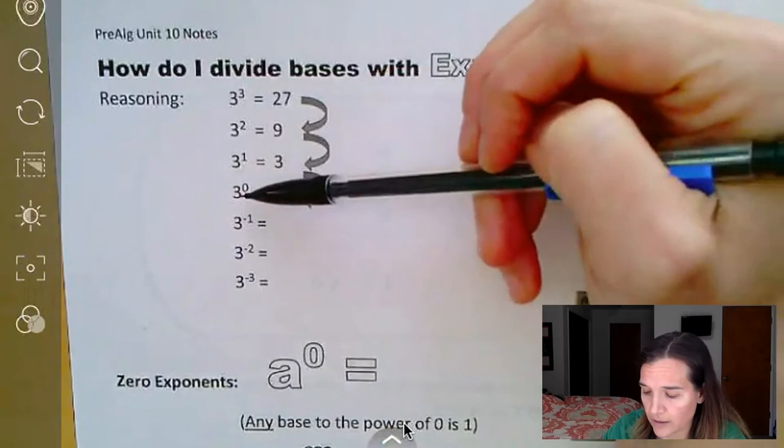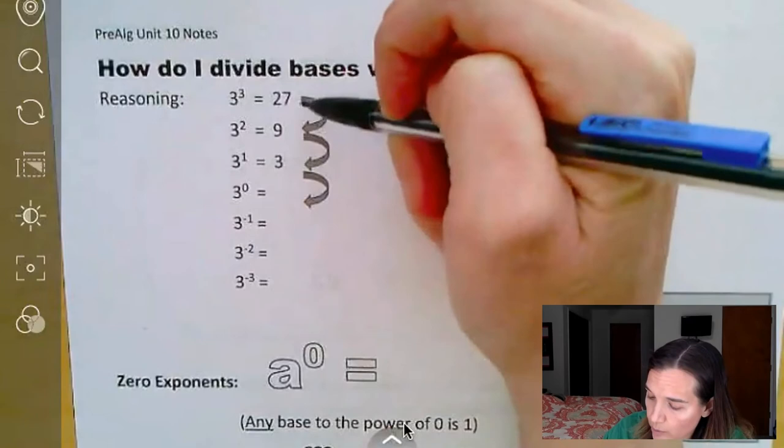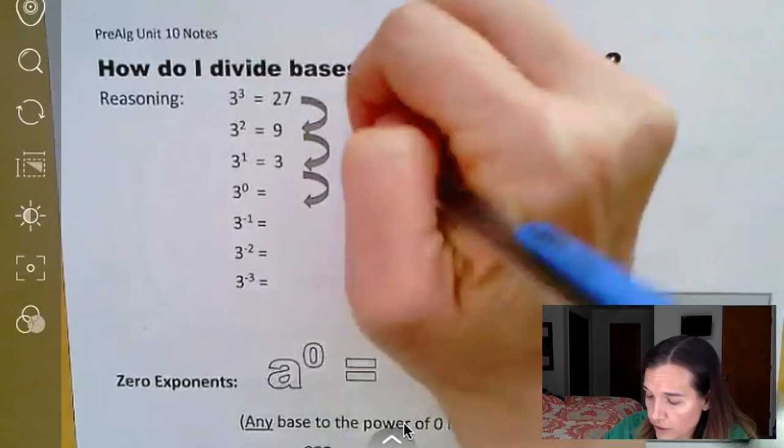What is three to the zero power? Well, we can look and see patterns. As we move up, we multiply by three each time. Three times three is nine. Nine times three is 27. If you look in the other direction, we're dividing by three each time.